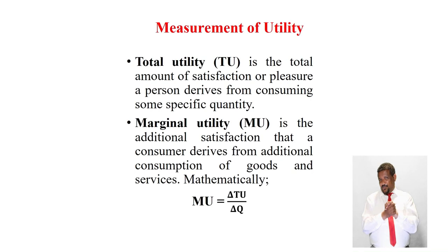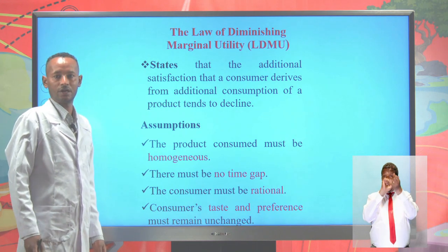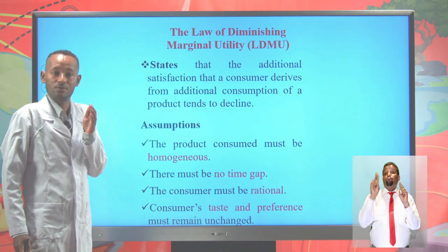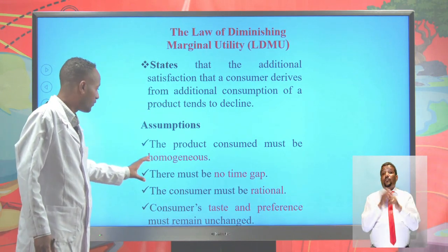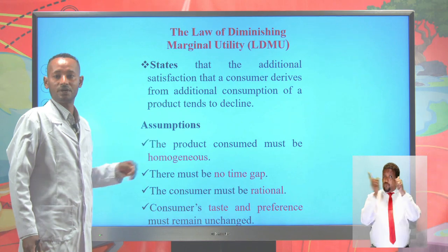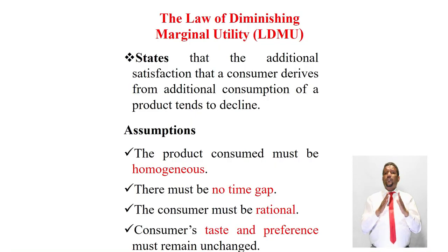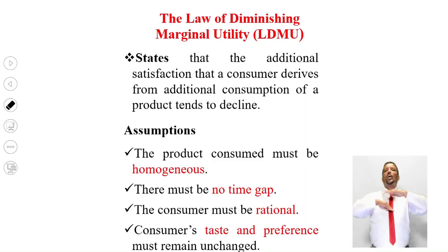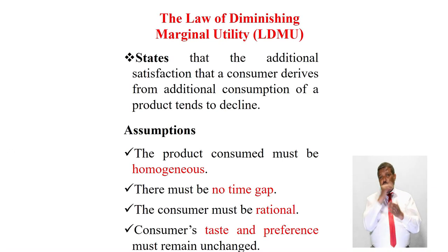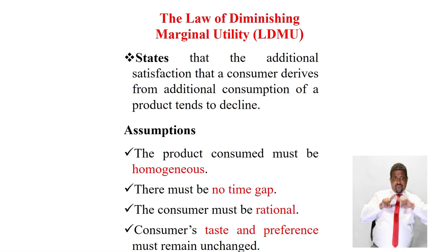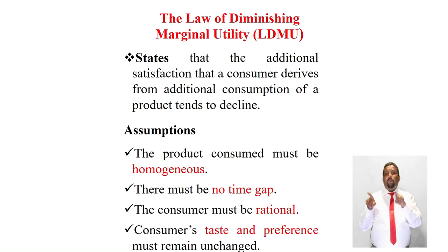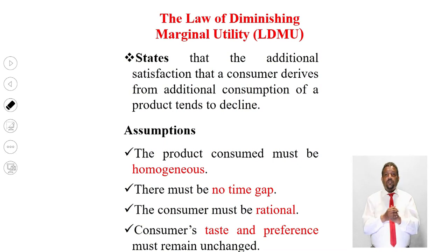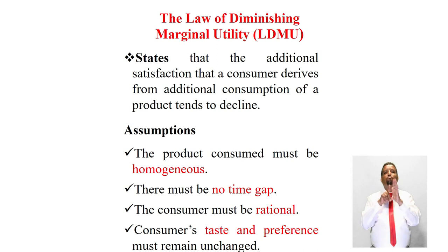There are also assumptions — preconditions — that must be fulfilled to apply the law of diminishing marginal utility. First, the consumer must be rational; if not, the law is not applicable. The second assumption is that the product consumed must be homogeneous — same color, same taste, same size. If the product consumed is heterogeneous, the law is not applicable.